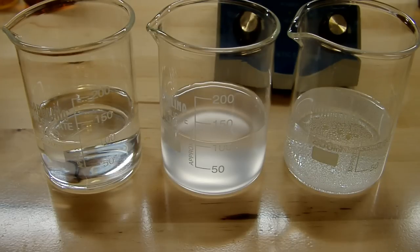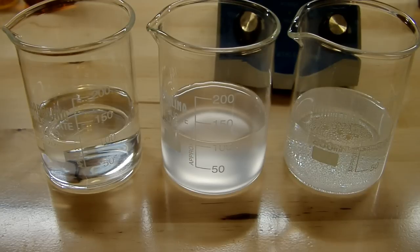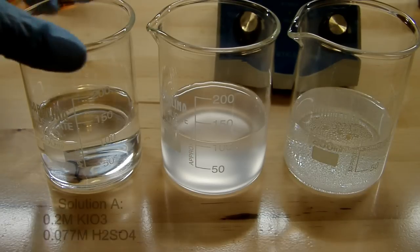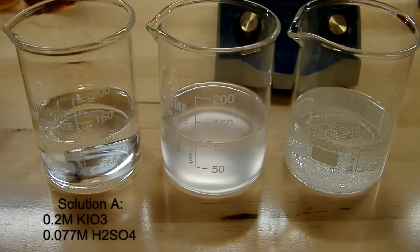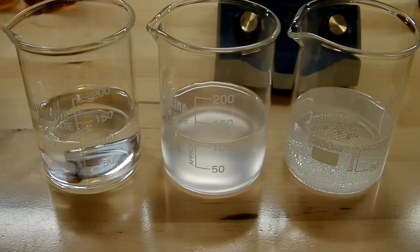This involves three separate solutions that I've already made here. I didn't film me actually making them so you just have to take my word for it that this is what they are. Solution A on the left here is 0.2 molar in potassium iodate and 0.077 molar in sulfuric acid.